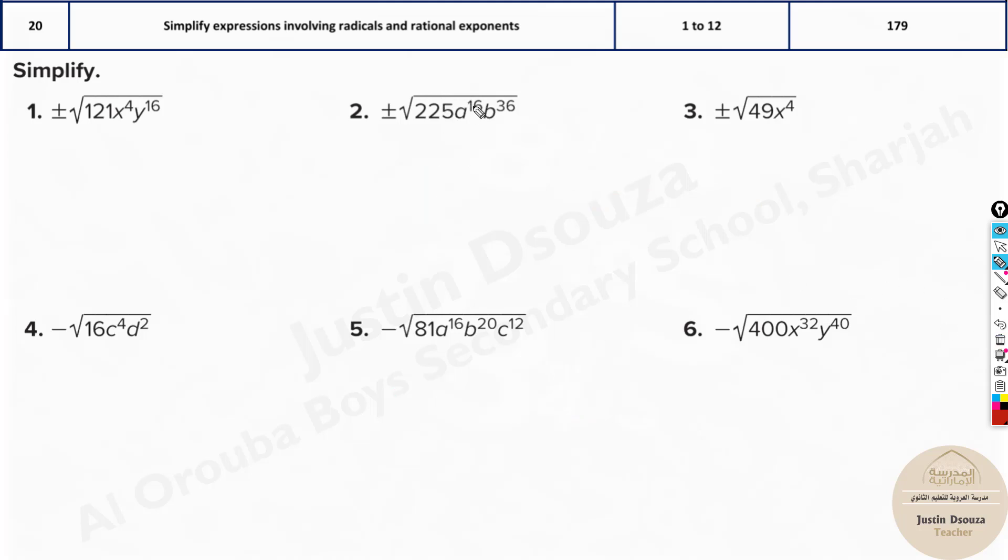Now here, since we have 16 already, the left part is very simple. It will be 225. In calculator you get the answer. But about this, a power 16 divided by 2, b 36 divided by 2. So the answer is square root of 225 is 15. And over here it's a power 8 and b power 18.